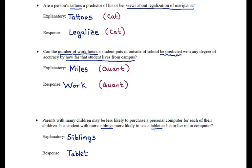Why might we be interested in whether work hours can be predicted by distance from campus? It could be that students who are well established with a job choose their home location by where they work and then go to the nearest campus, whereas full-time students working fewer hours might choose to live near a campus. In any case, we have a quantitative explanatory variable and a quantitative response variable.